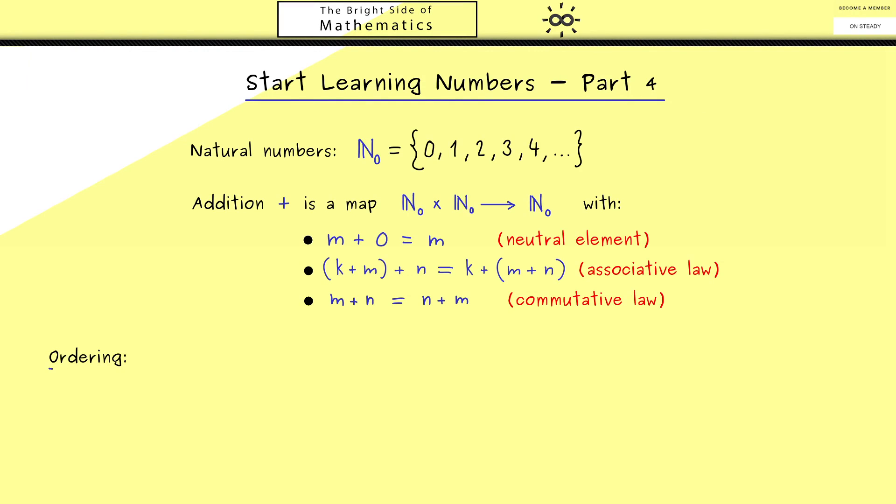Ordering just means when is a number greater or equal than another number. Hence we now give a meaning to the symbol we read as n is less or equal than m. So with the visualization in mind it should be clear how we can define this.